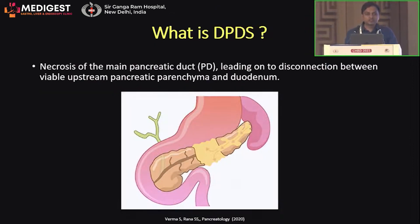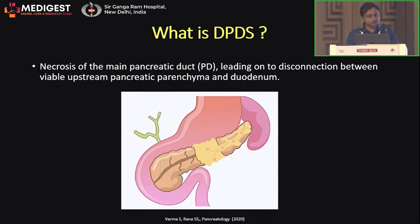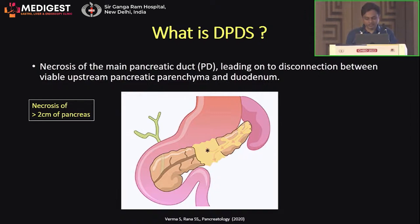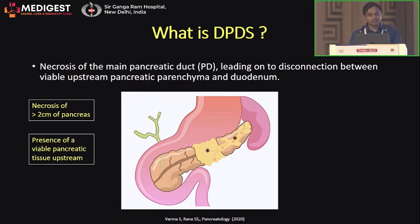Disconnected pancreatic duct syndrome (DPDS) is basically the necrosis of the main pancreatic duct leading to disconnection between the viable upstream pancreatic parenchyma and the duodenum. Three essential criteria define DPDS: first, necrosis of more than 2 cm of the pancreatic parenchyma, because anything less is likely to lead to a stricture but not a complete disruption. Second, there must be viable pancreatic tissue upstream that is able to drain pancreatic secretions into the disrupted duct.